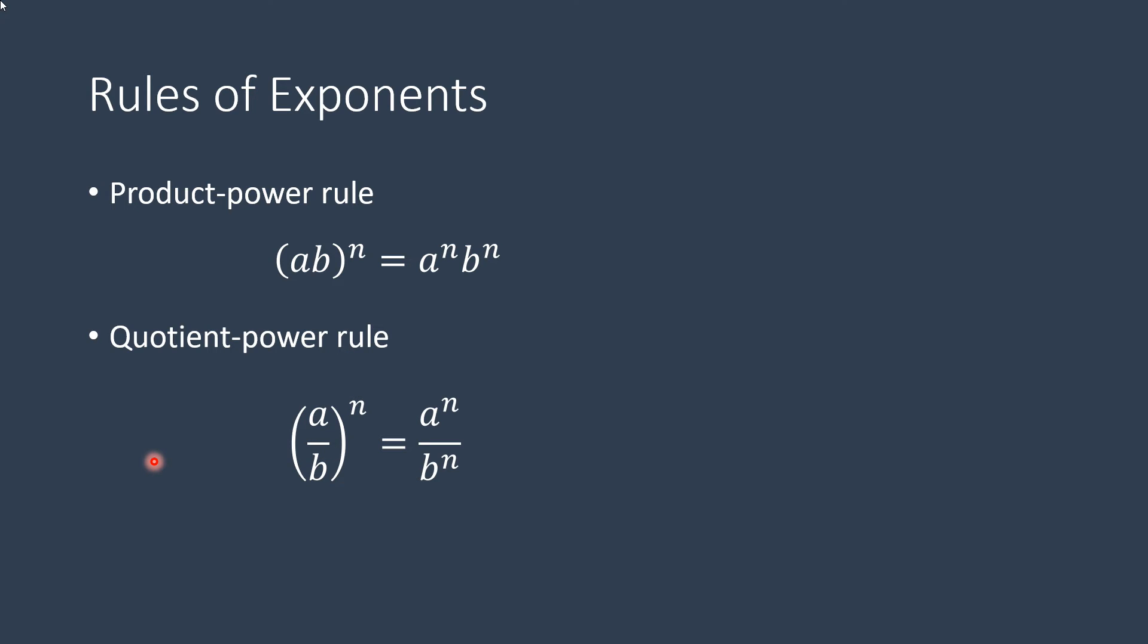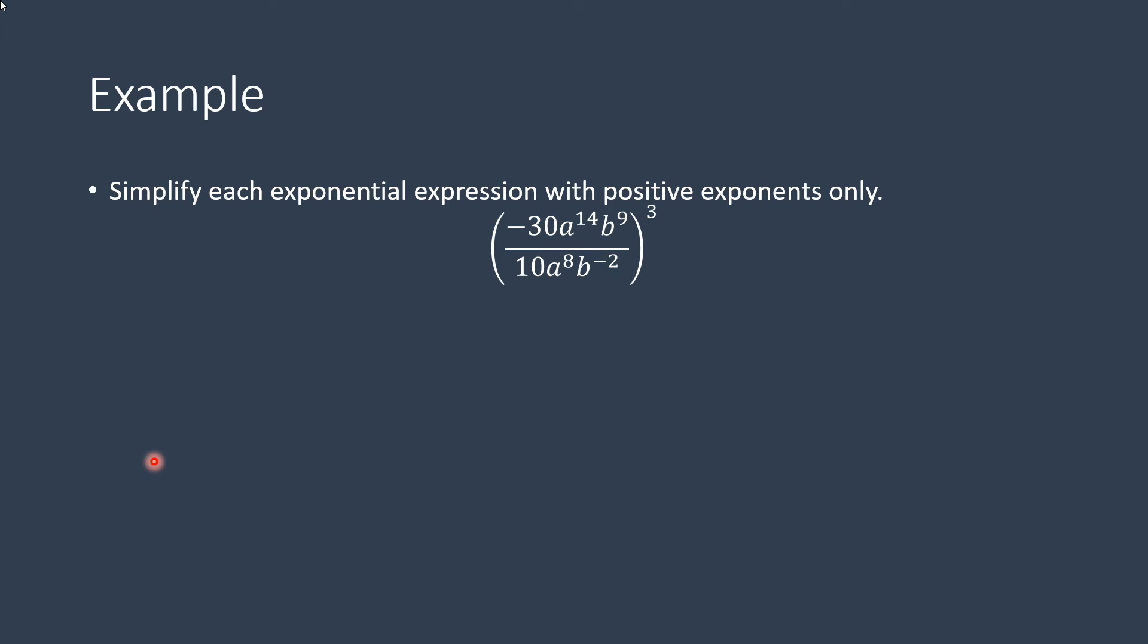So let's look at an example. Here we have negative 30a raised to the 14th power, b to the 9th, over 10a to the 8th, b to the negative 2nd power, all of that being cubed or raised to the 3rd power.